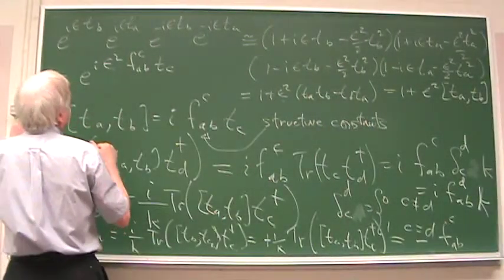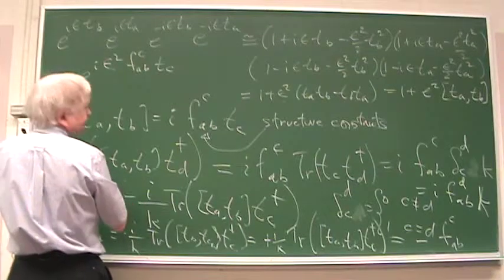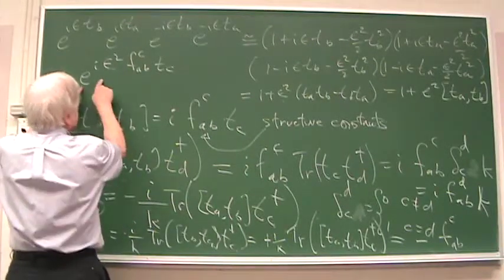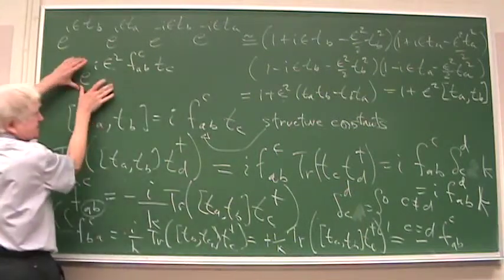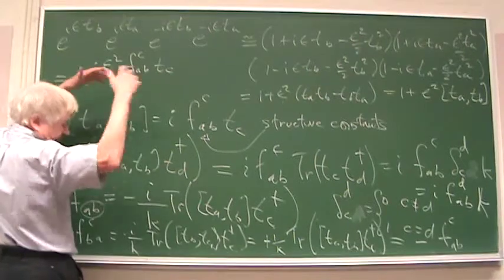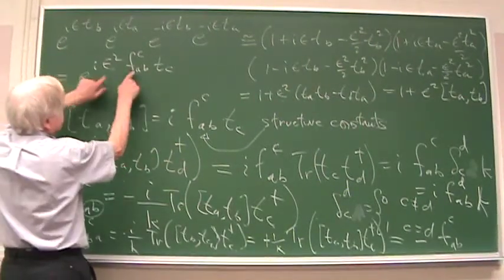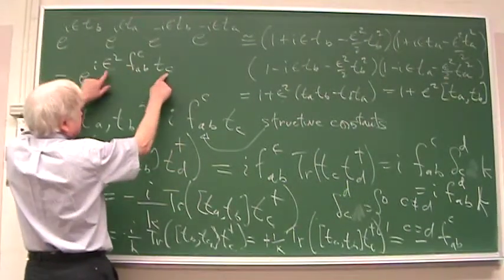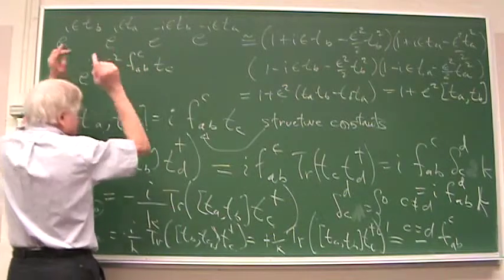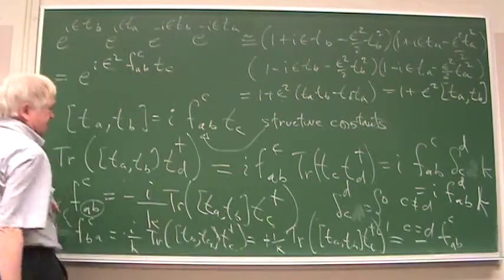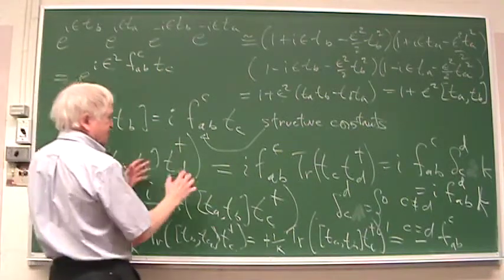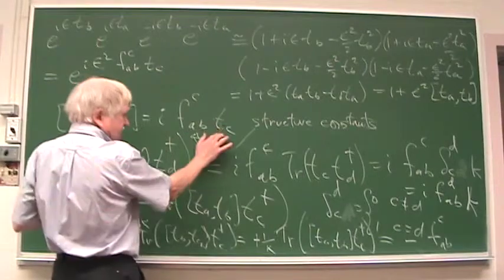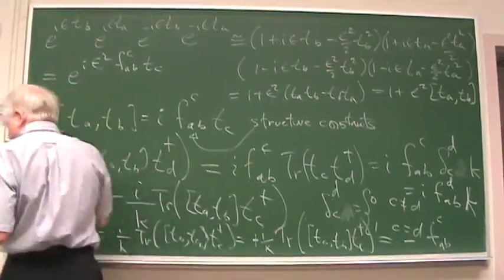And consequently, on the other hand, it has to be an element of the group because these are all elements of the group, and this is a matrix representing an element of the group. So this is some linear combination of the generators. We call those things the structure constants of the representation, and we get that the generators of the representation have a commutator that's the structure constants times the generators of that representation.